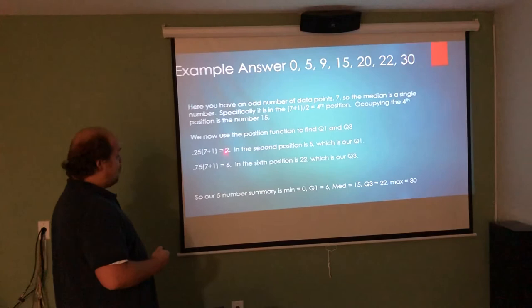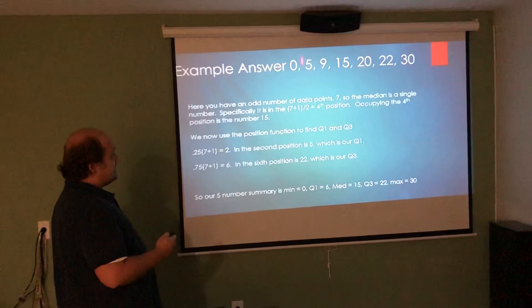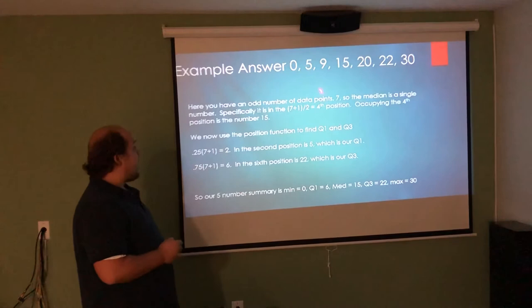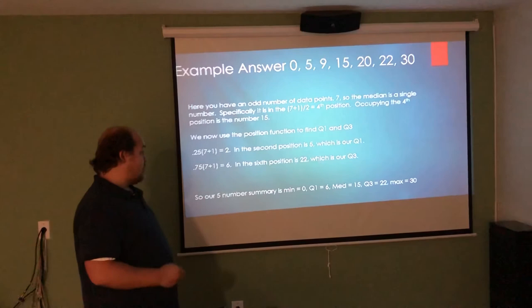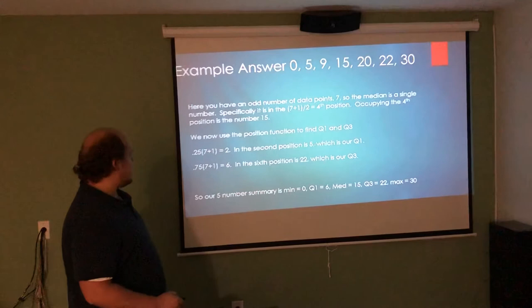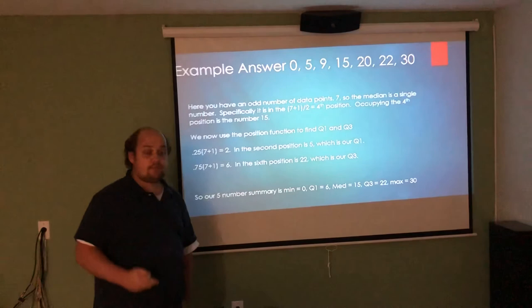Here, when I do 7 plus 1, I get 8. 8 times 0.25 is 2. So this tells me Q1 is in the second position. The second position is this data point 5. So 5 is our Q1. For Q3, I do 0.75 times n plus 1. 0.75 times 8 gives me 6. If I count over to the 6th position, 22 is in the 6th position. That means that my Q3 is 22. So our 5 number summary in this case would be 0 for the smallest data point. Q1 should be 5. Median should be 15. Q3 should be 22. And maximum should be 30, the largest data point.